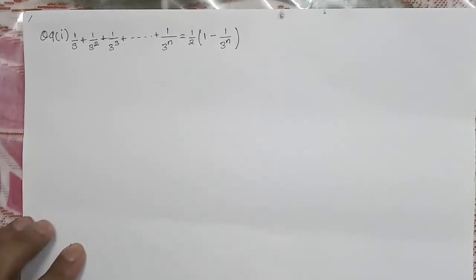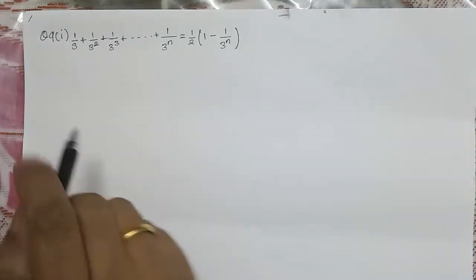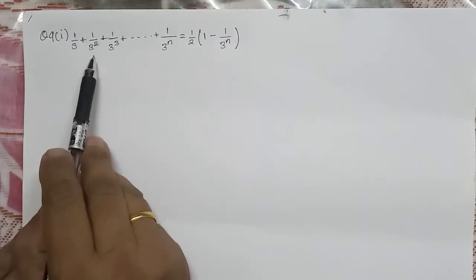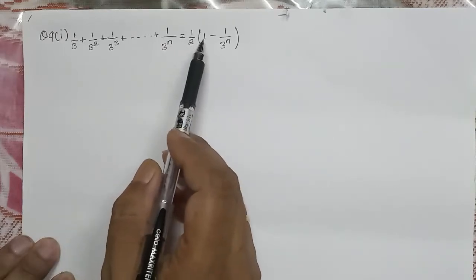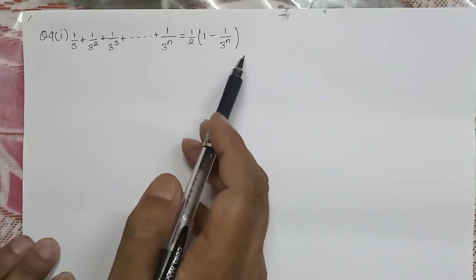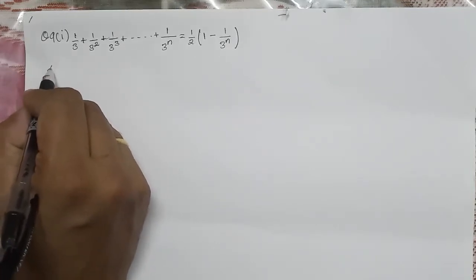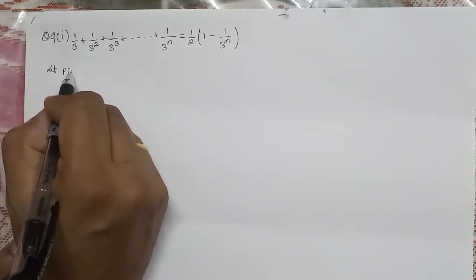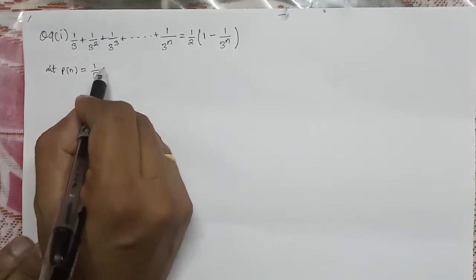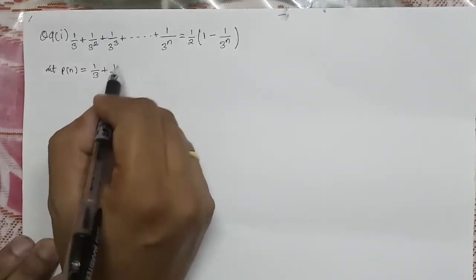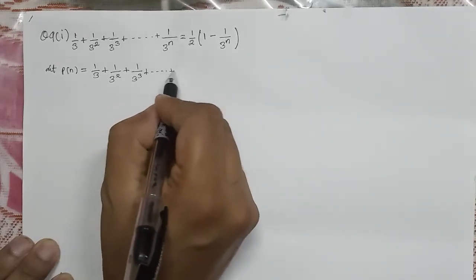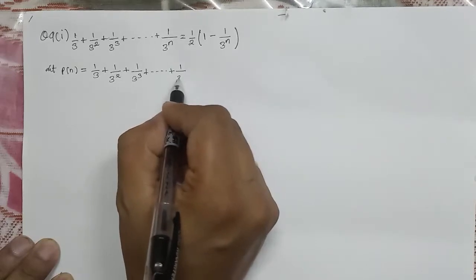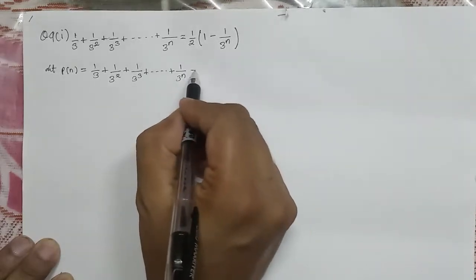Dear students of class 11, I'll continue with the Principle of Mathematical Induction. Question number 91: 1/3 + 1/3² + 1/3³ + ... + 1/3ⁿ = (1/2)(1 - 1/3ⁿ). First of all, I'll consider this given quantity as P(n). Let P(n) equal 1/3 + 1/3² + 1/3³ + ... + 1/3ⁿ = (1/2)(1 - 1/3ⁿ).